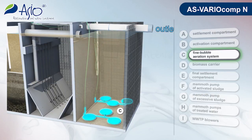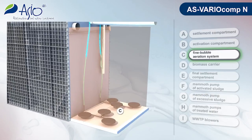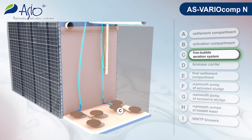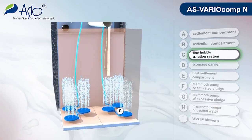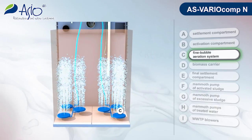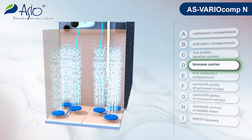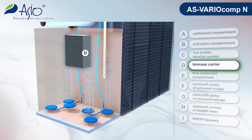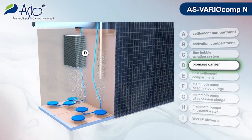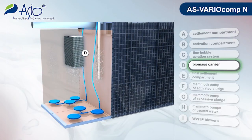In its bottom part, this space is fitted with a fine bubble aeration system into which air is fed by means of a blower, and possibly with a biomass carrier to improve the stability of the process of an overloaded or minimally loaded plant.